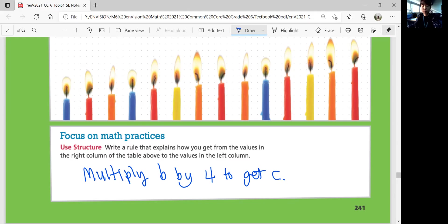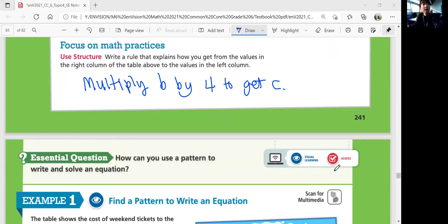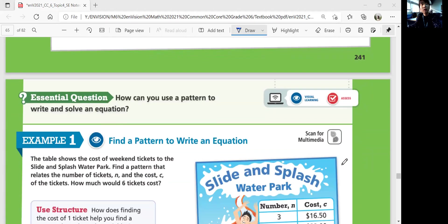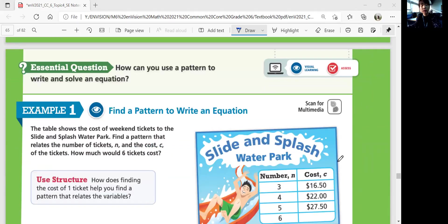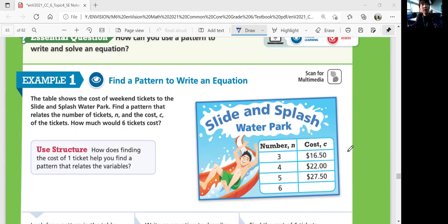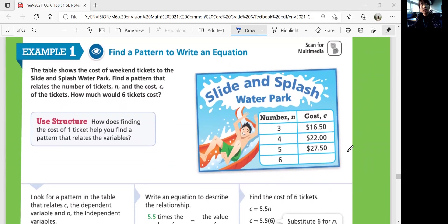In this lesson, we'll think about how we can use a pattern to write and solve an equation. Example 1, find a pattern to write an equation. The table shows the cost of weekend tickets to the Slide and Splash Water Park. Find a pattern that relates the number of tickets N and the cost C of the tickets. How much would 6 tickets cost? So figure out the pattern, and let's figure out how much 6 tickets would cost.